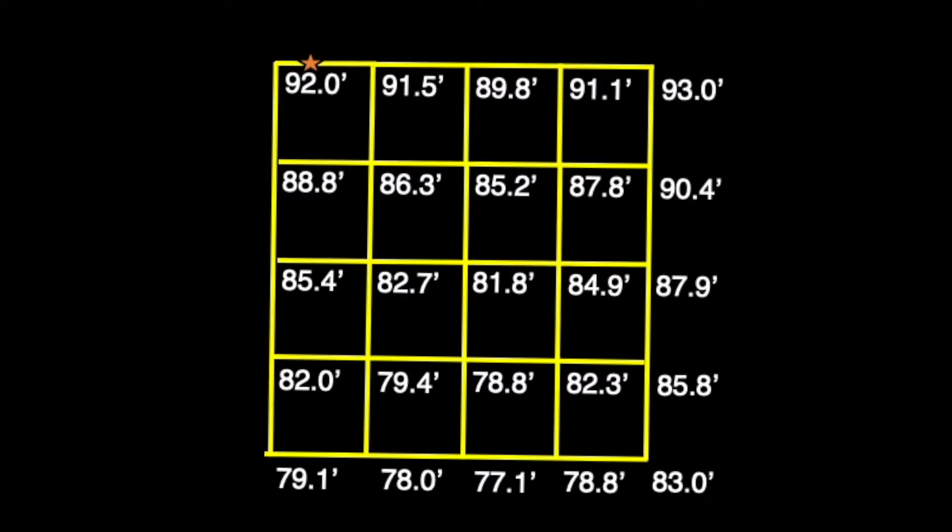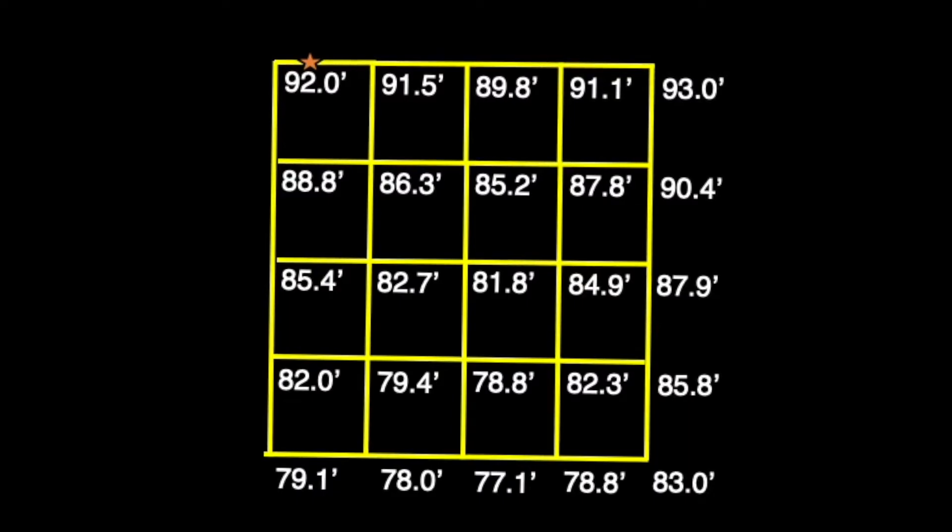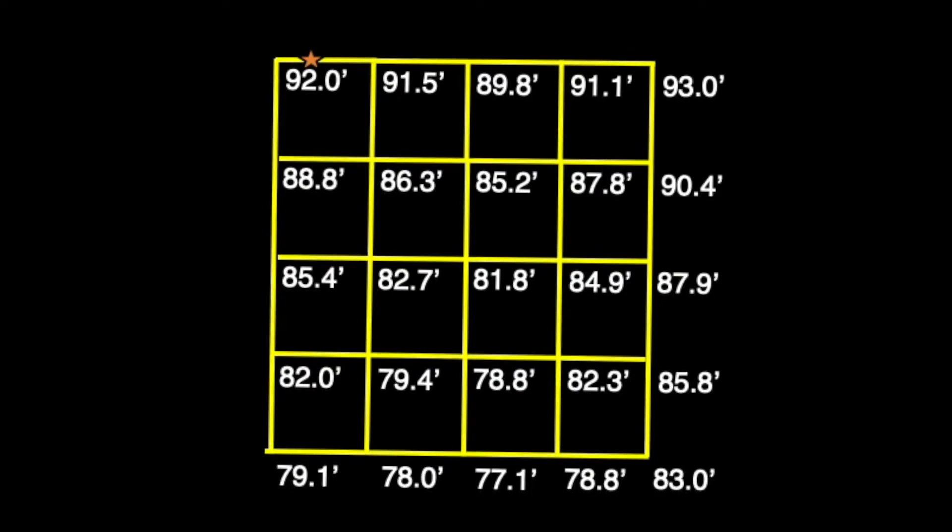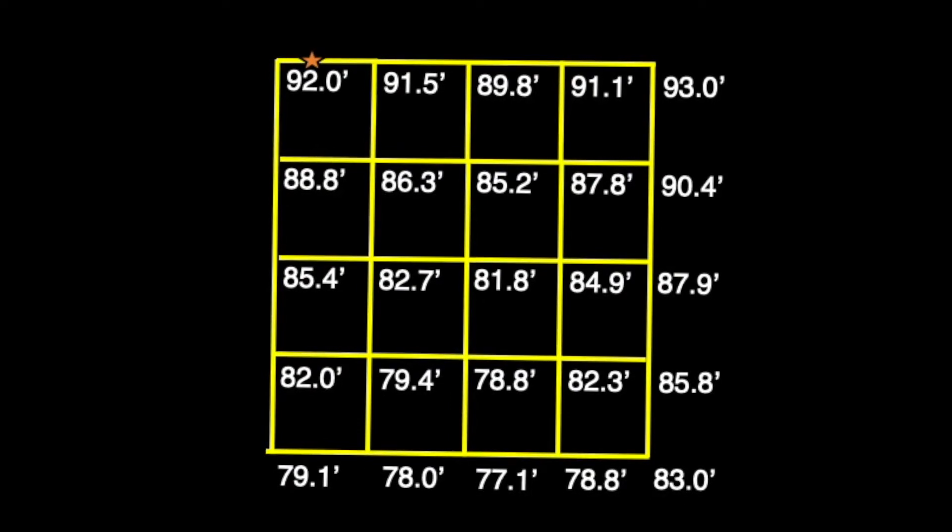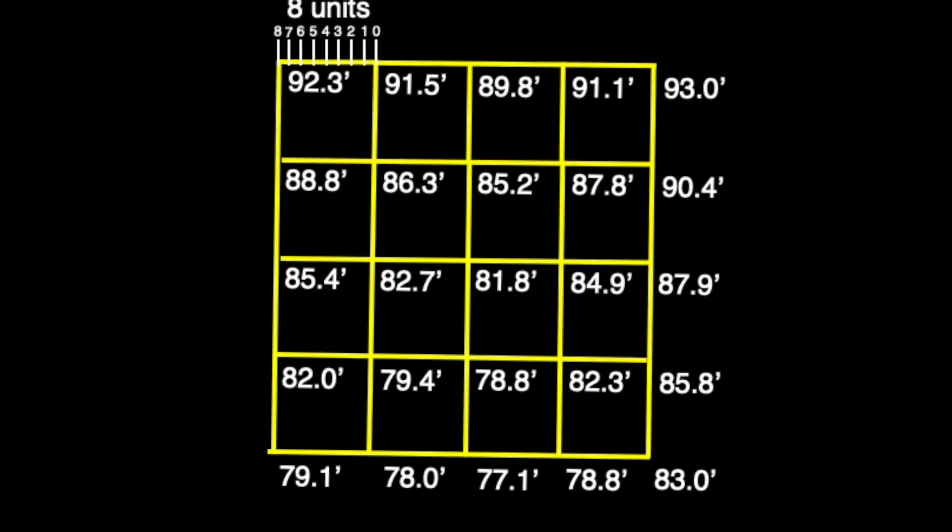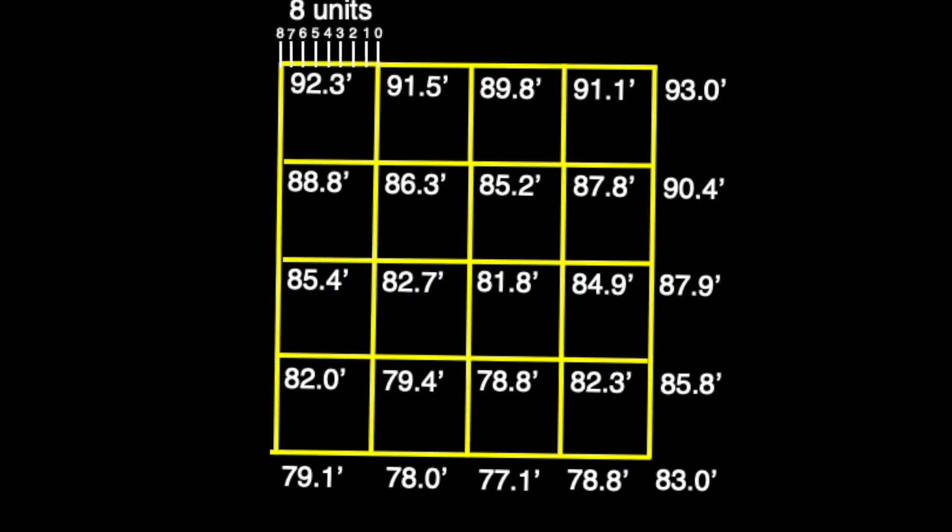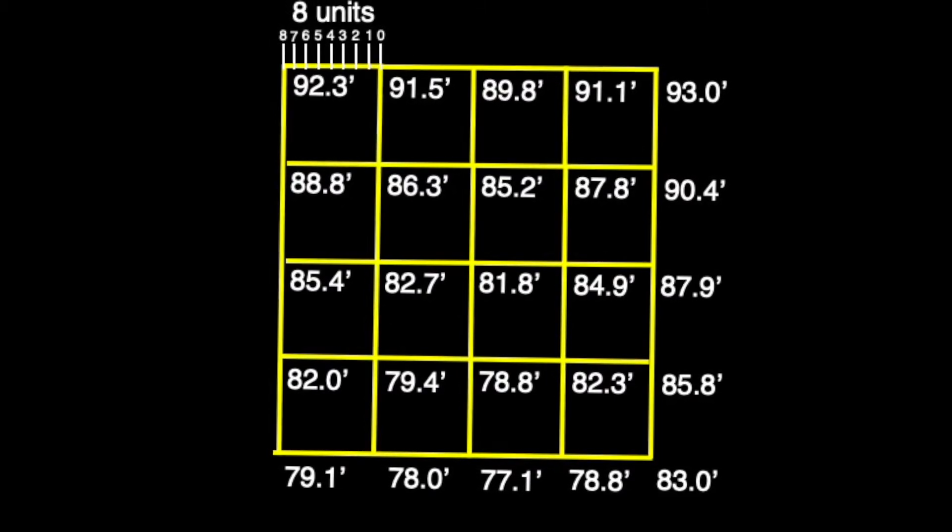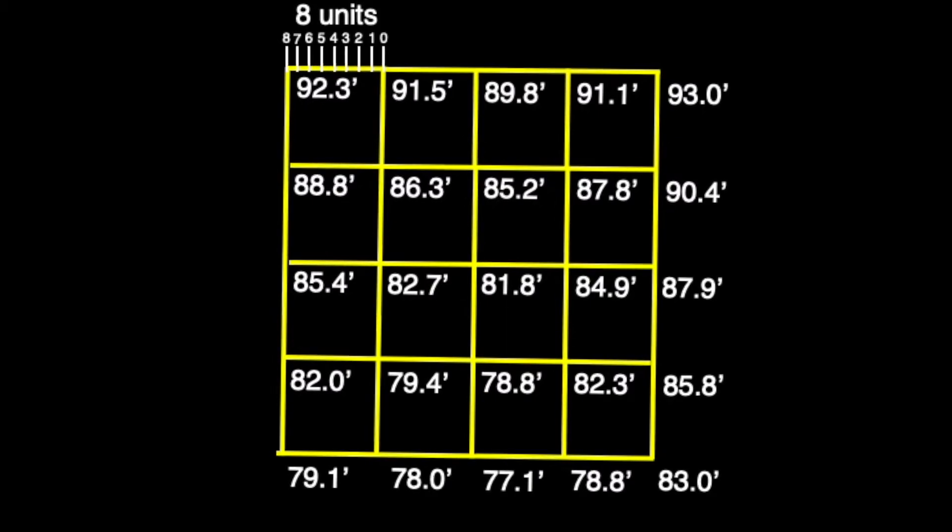This is one of two ways we can reach this point, as we could have also counted up from our other elevation point of 91.5 feet. In this case, we would reverse the operation performed since we're counting up towards our desired whole number of 92 feet instead of down to it.